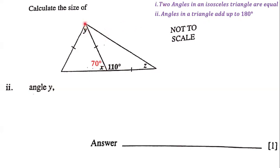Notice that this triangle is an isosceles triangle. How do we know? We know because the two sides are equal in measure. We know the two sides have the same length because each of the sides has one stroke on it, and this one stroke indicates that these two lines are equal in measure. So this is an isosceles triangle.